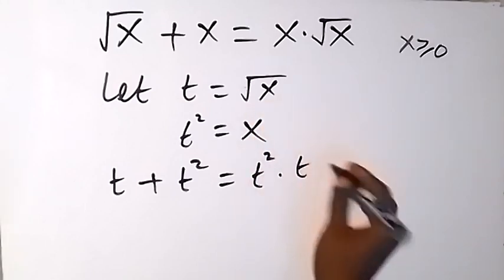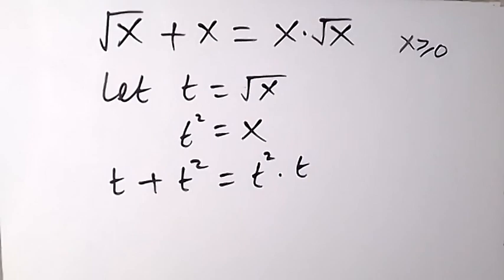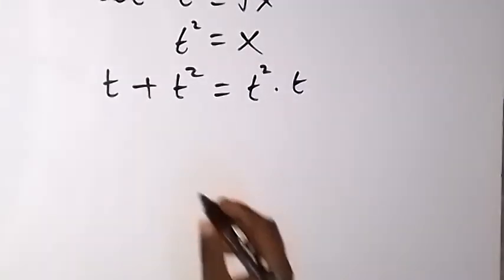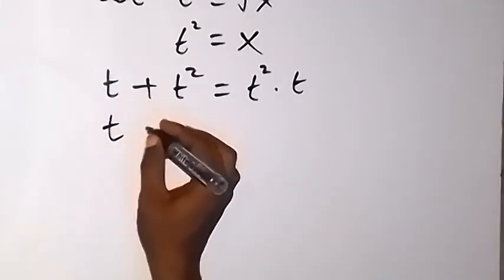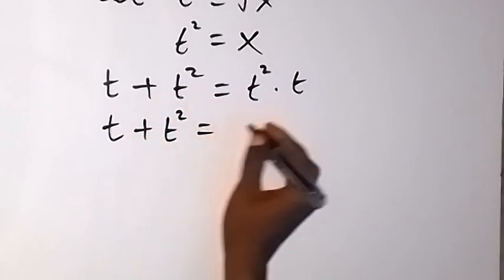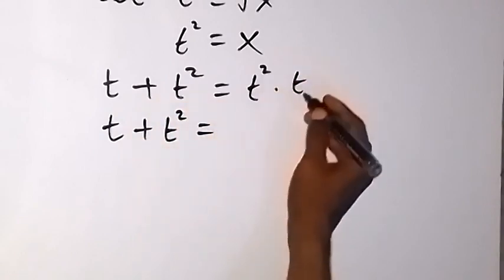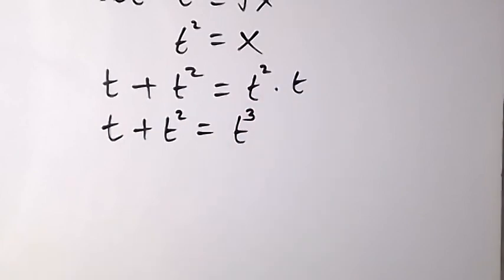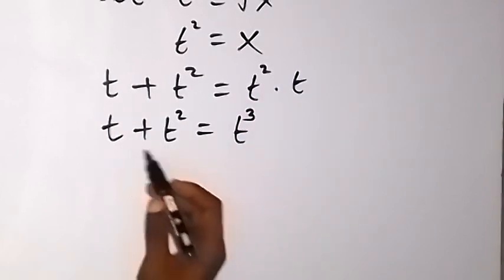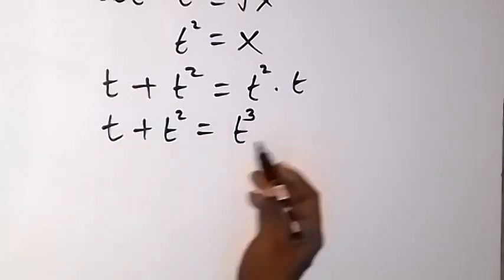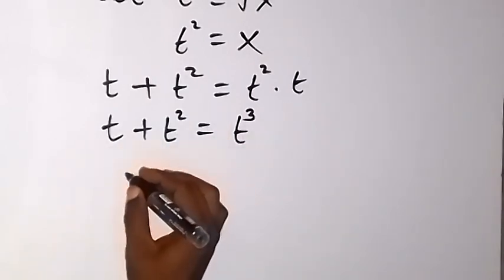So when we solve, we have t + t² equals t²·t, which by the law of indices is t³. We can then use this to form an equation, taking everything to one side so that side becomes zero.